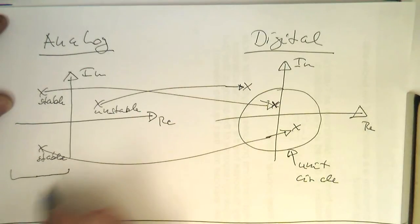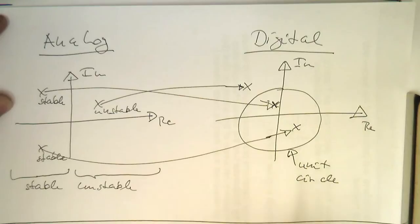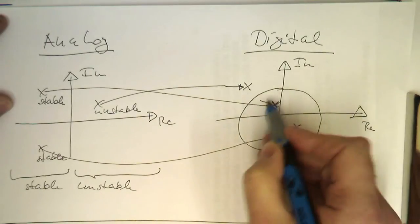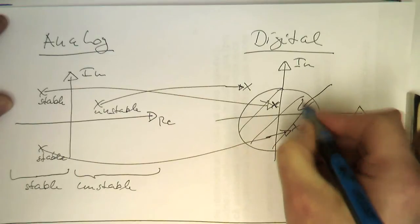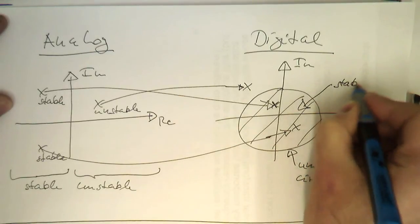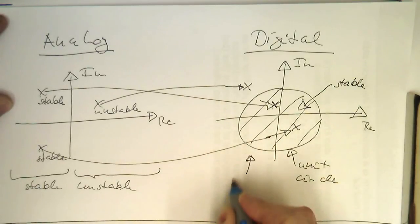So where we have here the region of stability is here: stable, unstable. And in the digital domain it is so that this region here, this is stable, and this region here outside is unstable.